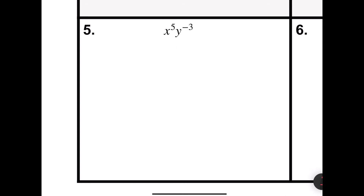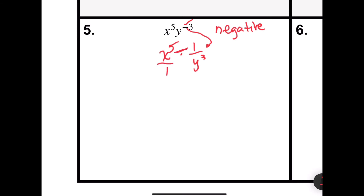Problem number five says x to the 5th, y to the negative 3rd. In this problem, I have a negative exponent, so I'm going to have to use the rule for negative exponents. That rule says that we will take the reciprocal and make the exponent positive. So I would have x to the 5th being multiplied by not y to the negative 3rd, but 1 over y to the 3rd. We can look at this as fractions — x to the 5th over 1. When I multiply across the top, x to the 5th times 1 is x to the 5th. When I multiply across the bottom, 1 times y to the 3rd is y to the 3rd. So my answer would be x to the 5th over y to the 3rd.